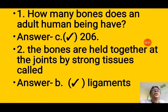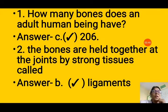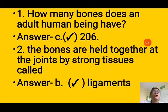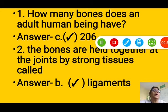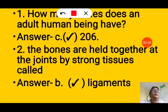Second question: The bones are held together at the joints by strong tissues called — options are vertebrae, valves, ligaments, spinal cord. The correct answer is option B, that is ligaments.